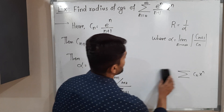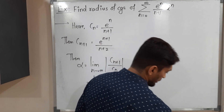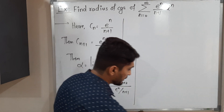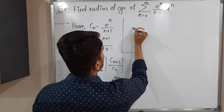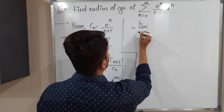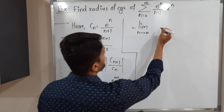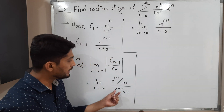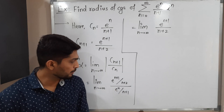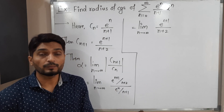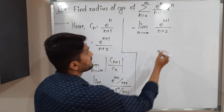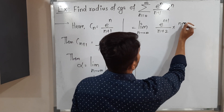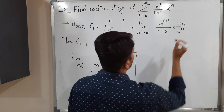Let me continue. This equals the limit as n tends to infinity of [e^(n+1)/(n+2)] divided by [e^n/(n+1)]. Since the second fraction is in the denominator, we flip it to multiply: so (n+1) comes to the numerator and e^n goes to the denominator.